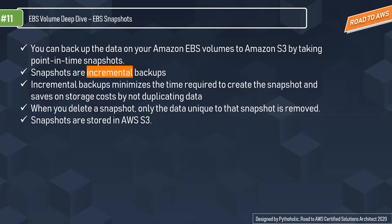When you delete a snapshot, only the data unique to that snapshot is removed. For restore, each snapshot contains all the information needed to restore your data to a new EBS volume. When you create an EBS volume based on a snapshot, the new volume begins as an exact replica. The replicated volume loads data in the background so you can begin using it immediately, and if you access data not yet loaded, the volume downloads it from Amazon S3 immediately.